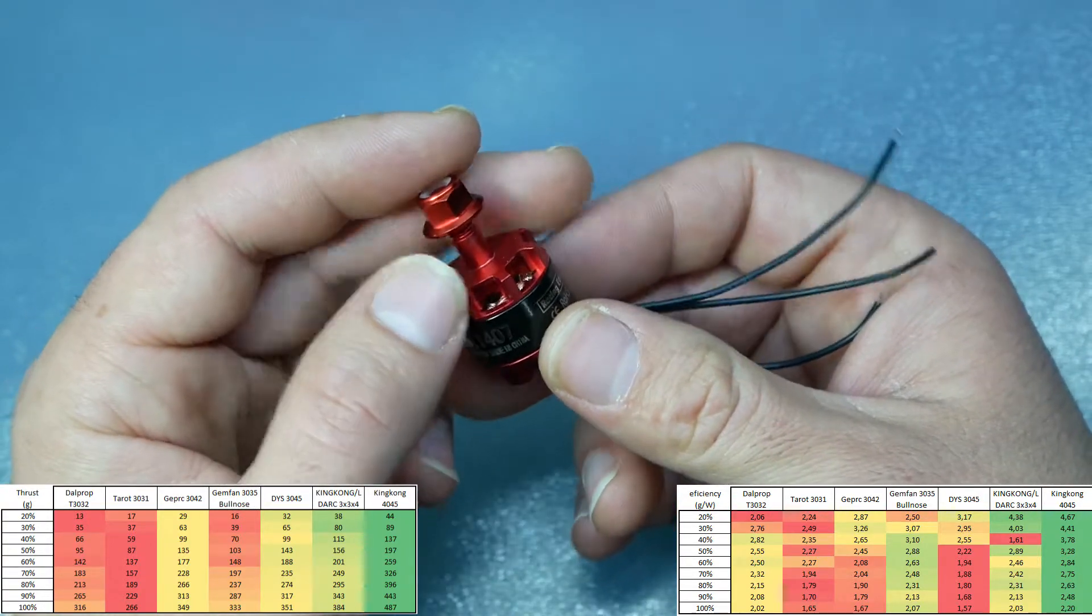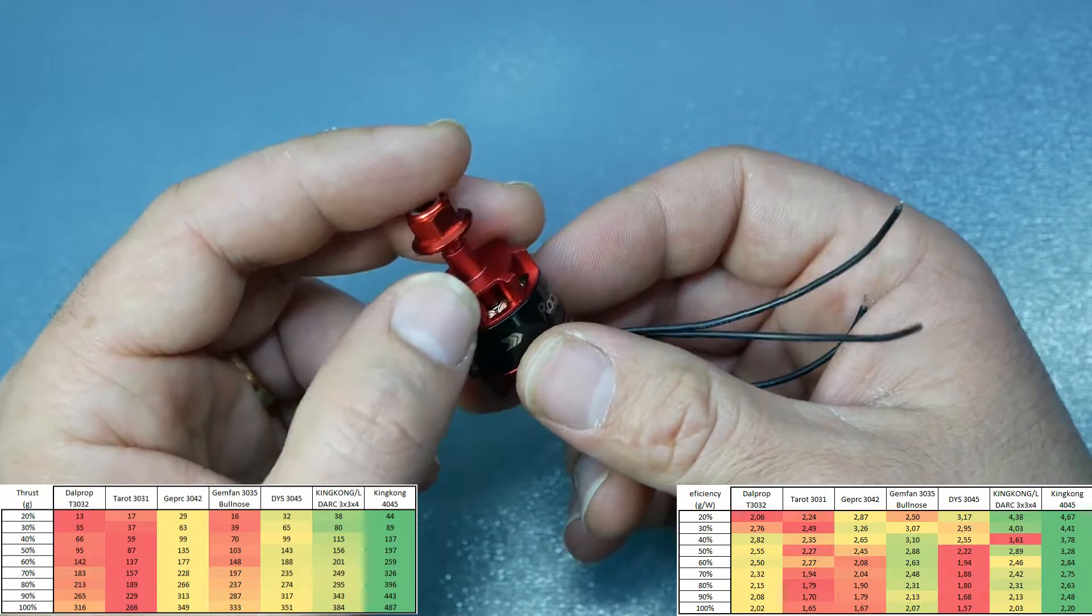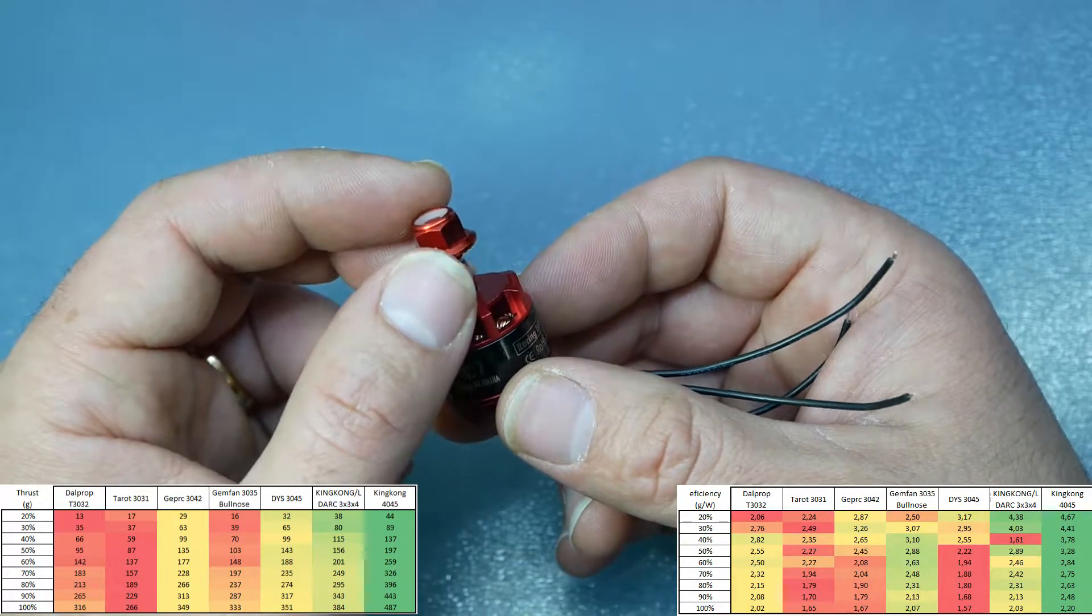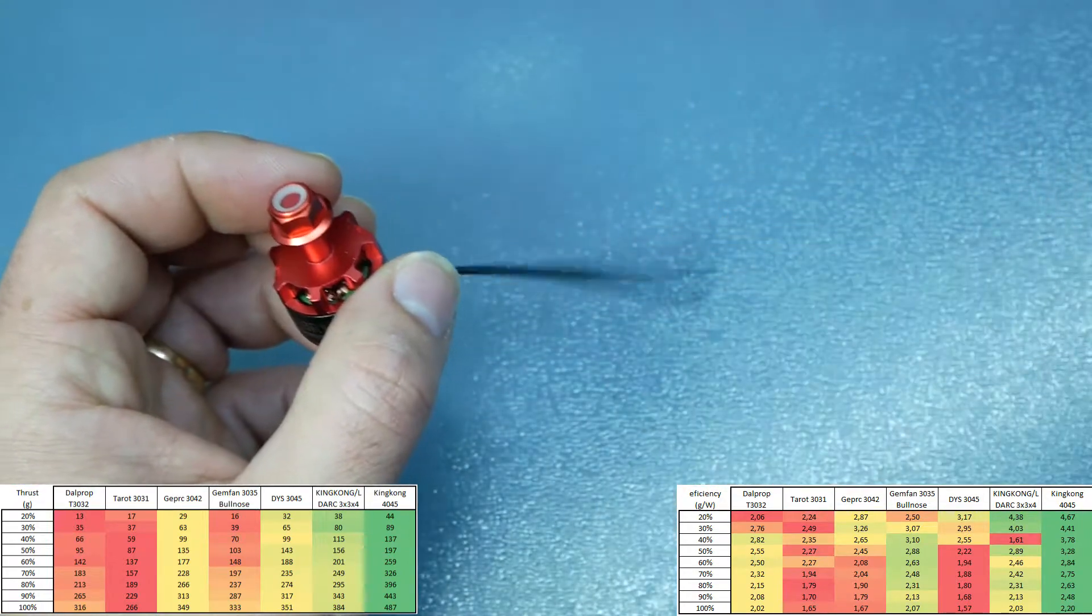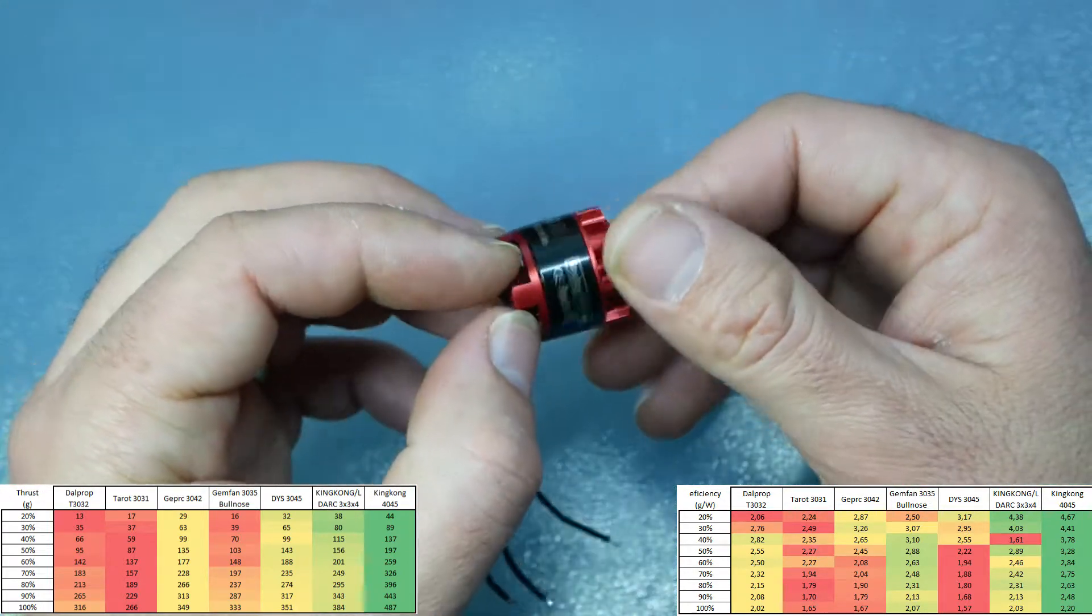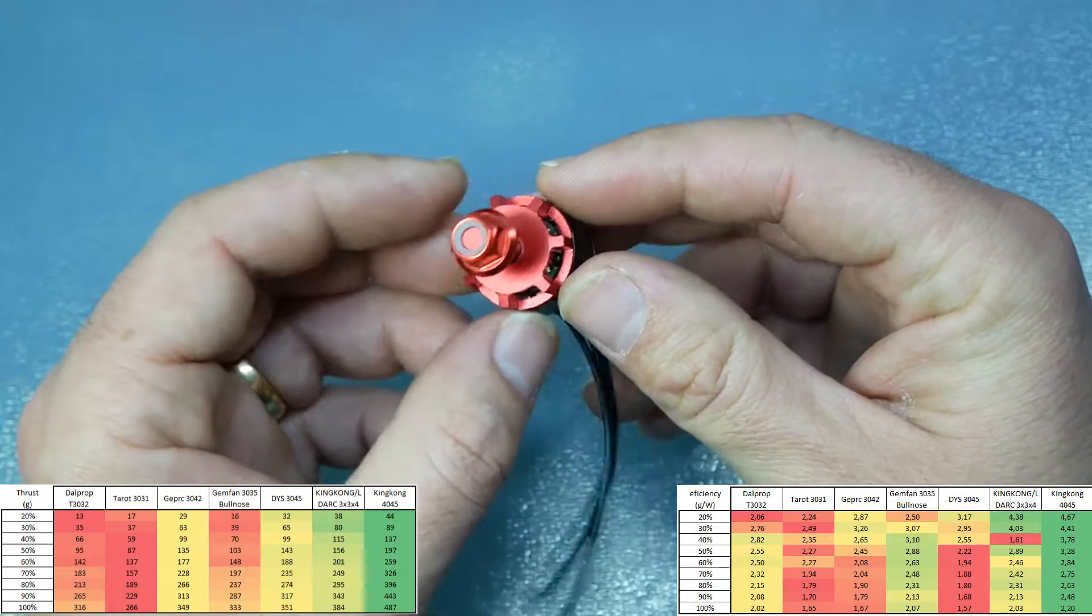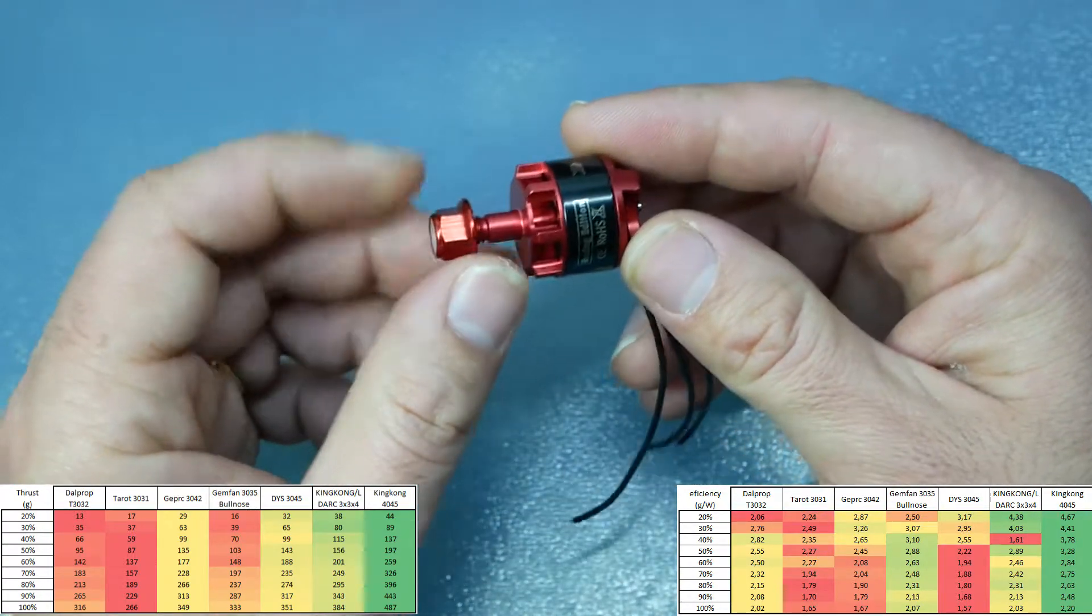With 3-blade propellers the most I achieved was 350 grams with a JJRC propeller. You can consult all the results on the table that I will leave on this video.